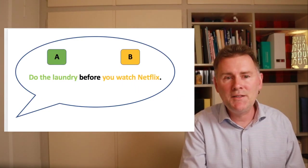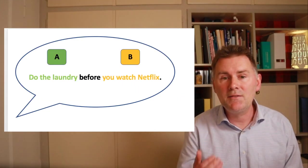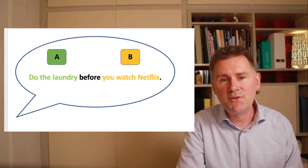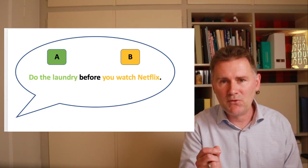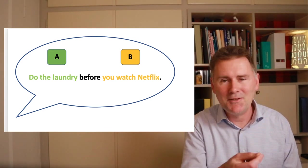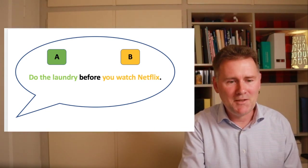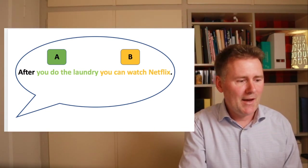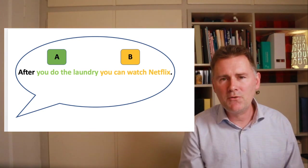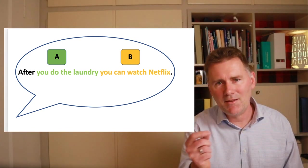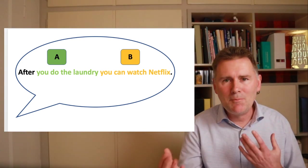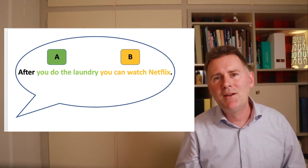So here's an example of a complex sentence that is in line with Iconicity of Sequence. If I say, do the laundry before you watch Netflix, event A is supposed to happen before event B. And I linguistically express event A before I turn to event B. Here's another example. After you do the laundry, you can watch Netflix. You see, it's the same principle. You do the laundry, that's event A. You can watch Netflix, that is event B. And the linguistic structure maps onto the temporal sequence of those two events as I conceptualize them.